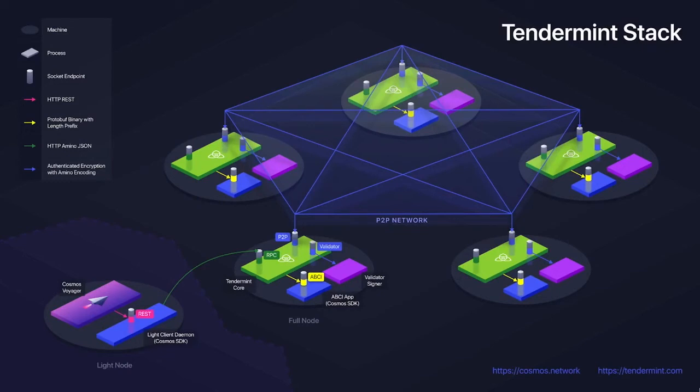Here you can see an overview of the Tendermint stack. Usually, with the Cosmos SDK, you have an in-process connection with Tendermint core, so it's communicating through a socket protocol, and you can also communicate via gRPC, which in some cases leads to a slower state machine. And then we have KSMs and easy-to-use REST clients. The Cosmos Voyager doesn't exist anymore — it has forked into Looney.